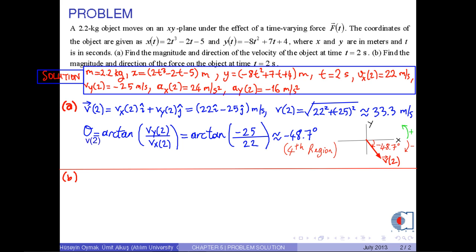In part B, we use Newton's second law to find the force. Then F(2) = Fx(2) i hat + Fy(2) j hat. Or by Newton's second law, we have m times ax(2) i hat + ay(2) j hat.